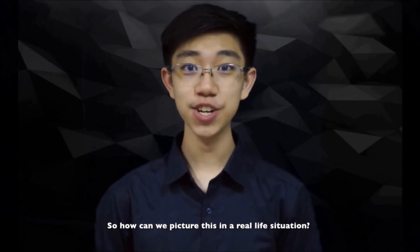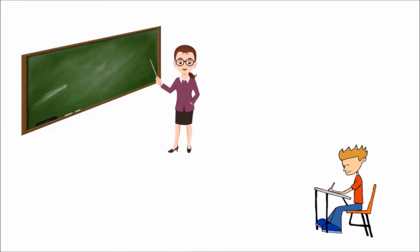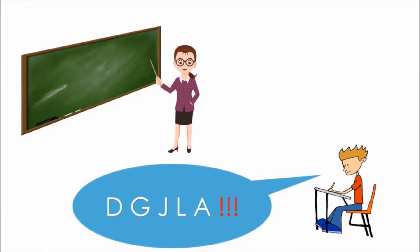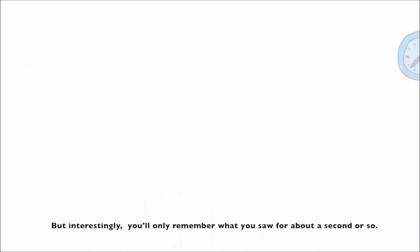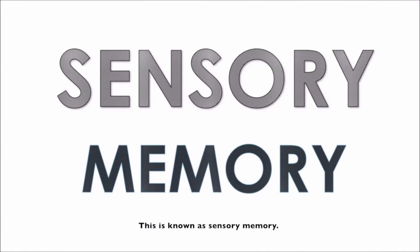So how can we picture this in a real-life situation? Suppose you were in a classroom and a teacher flashes a series of letters D-G-J-L-A for one second that you need to memorize. You are able to pronounce them accurately and in order because these are just five letters. After encoding the information from the sense of sight, you were able to store and retrieve the information. But interestingly, you'll only remember what you saw for about a second or so. This is known as sensory memory.